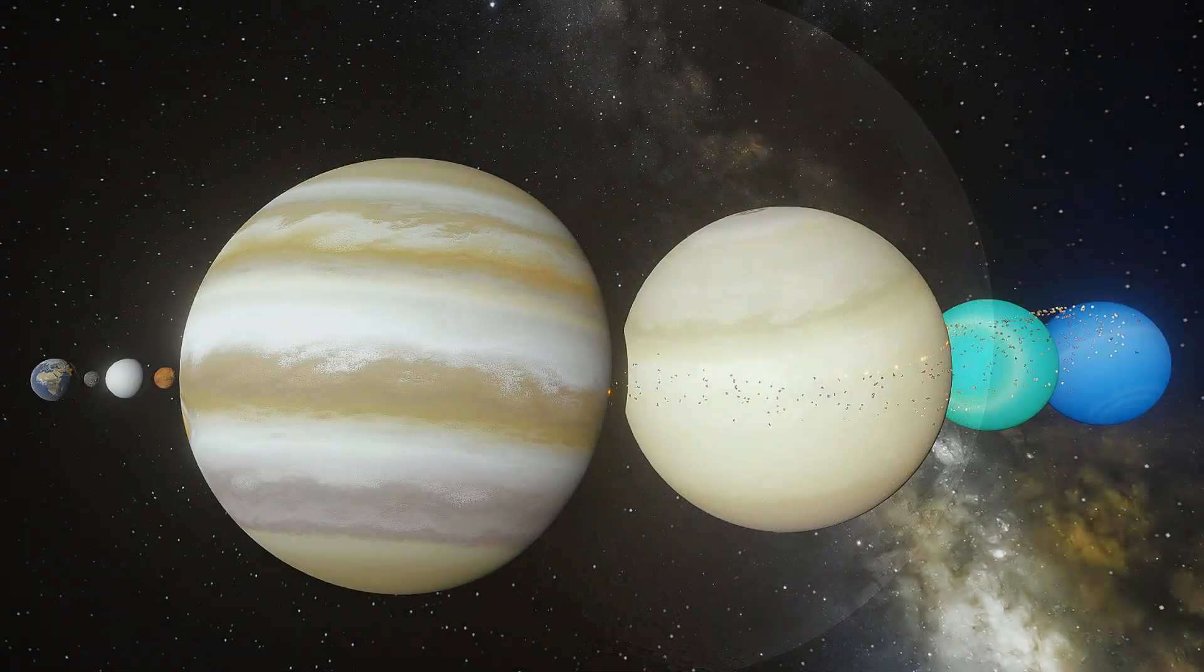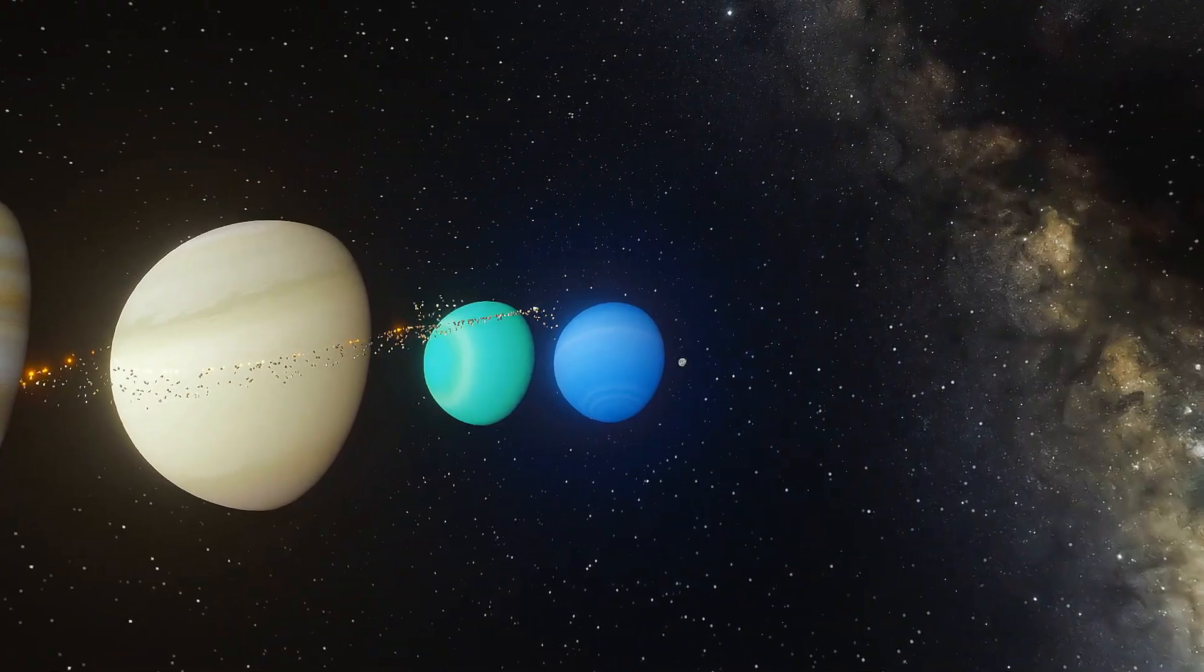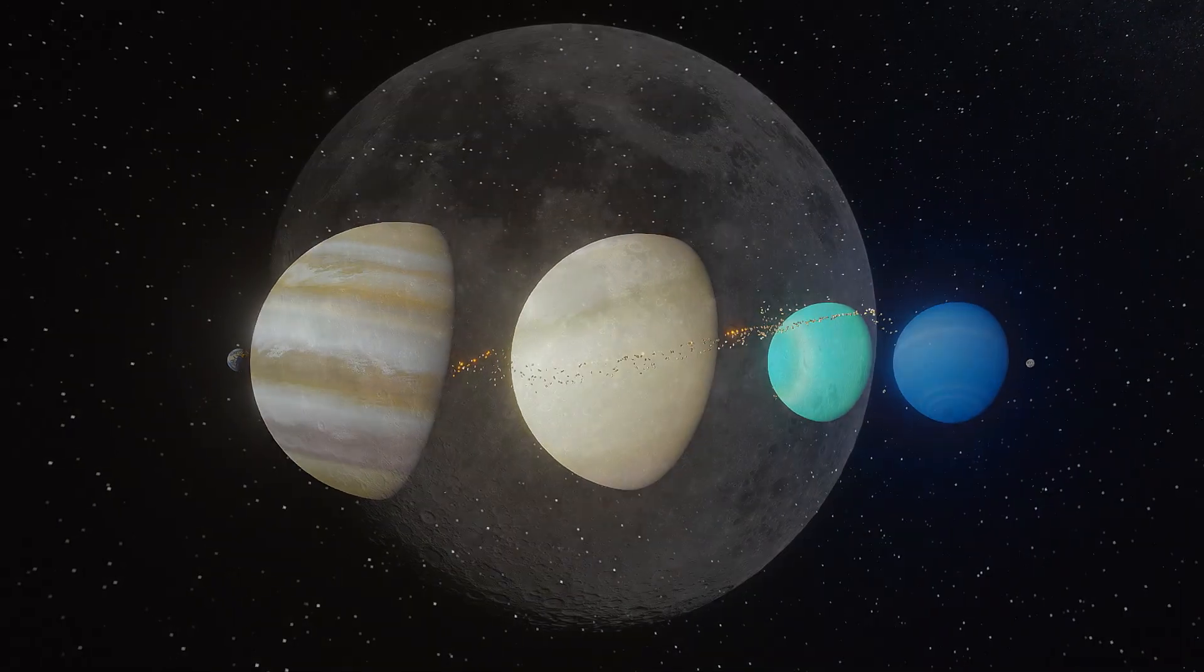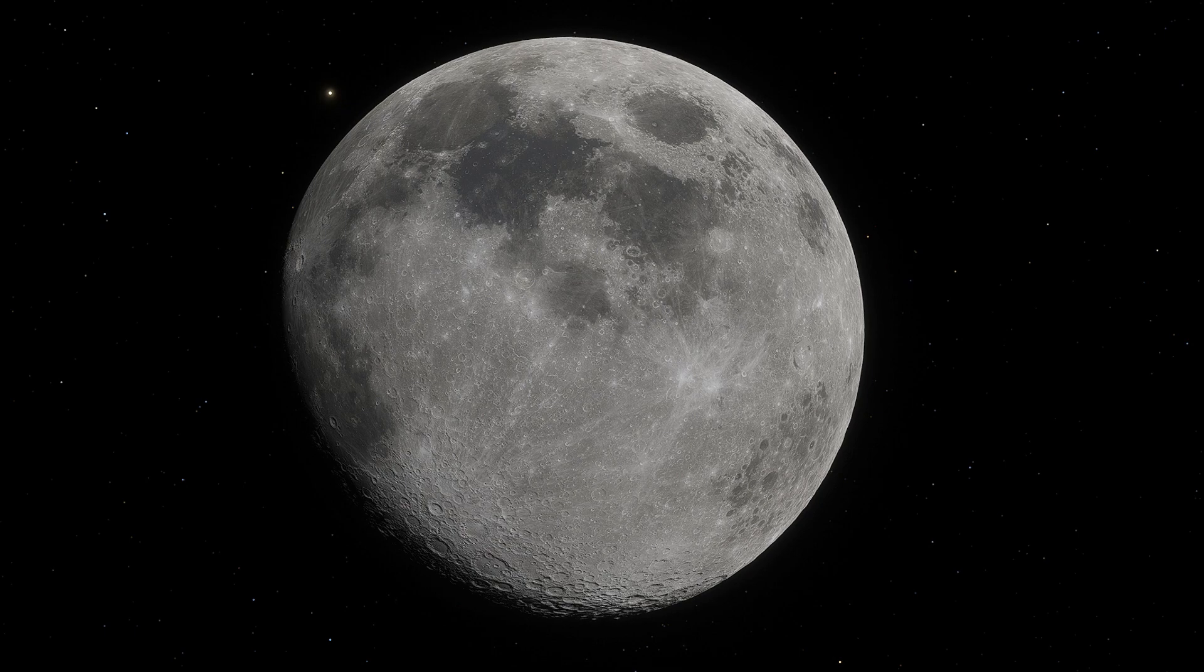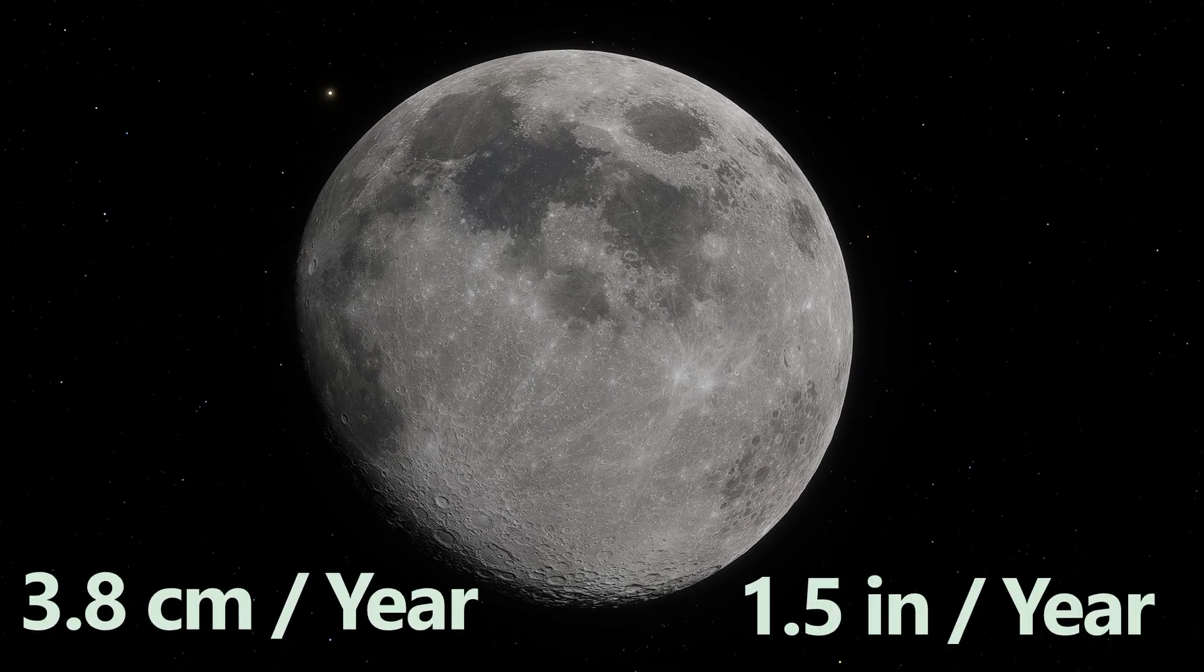In fact, if you lined up the diameters of all the planets in our solar system, one after another, they would almost fill the space between Earth and the Moon. Additionally, the Moon is slowly moving away from Earth at a rate of about 3.8 centimeters per year, which is roughly one and a half inches.